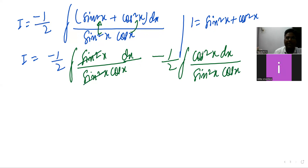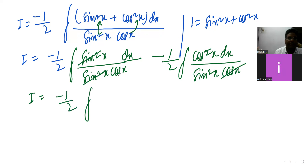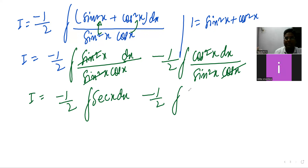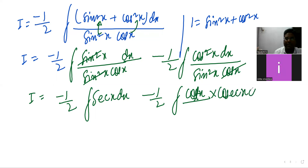One sin²x cancels with the other, and one factor of cosx cancels. Remaining is I = minus 1/2 integration. Taking cosx into the numerator gives sec(x) dx. Minus 1/2 integration: cot(x) with sin taken to the numerator gives cosec(x) dx.